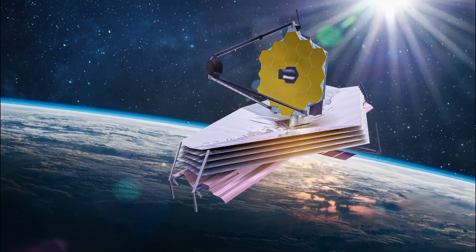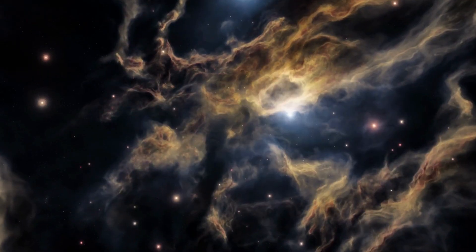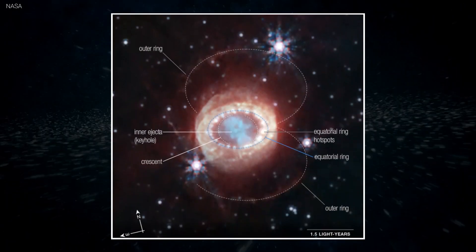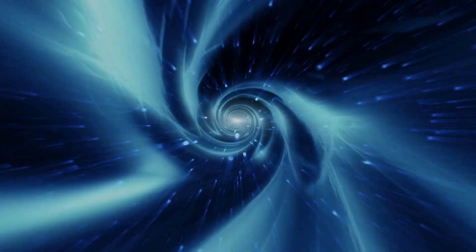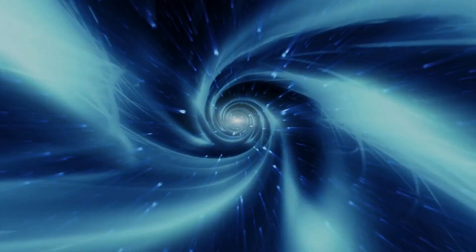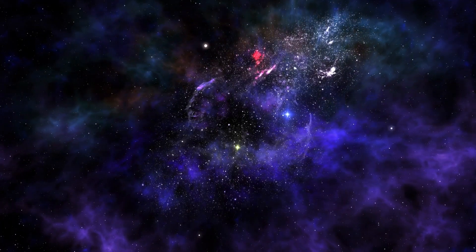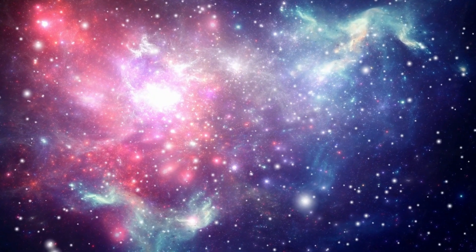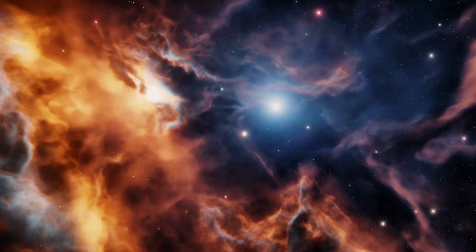The James Webb Space Telescope has once again illuminated the heavens, revealing the intricate beauty hidden within the remnants of a dying star. Supernova 1987a, a celestial spectacle from 168,000 light years away, has unveiled its secrets thanks to the unmatched capabilities of this remarkable telescope.